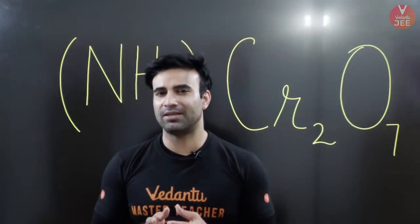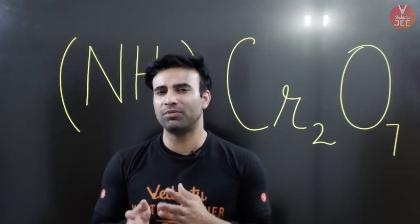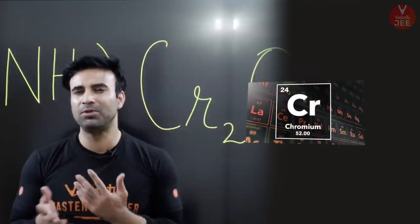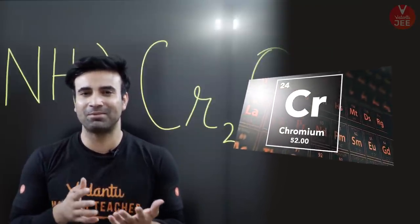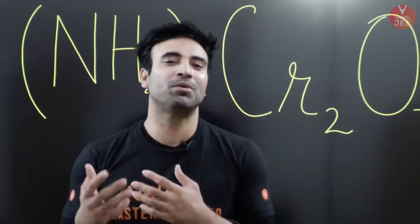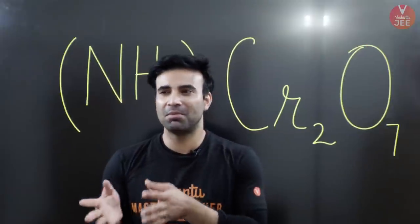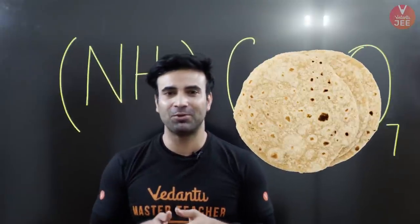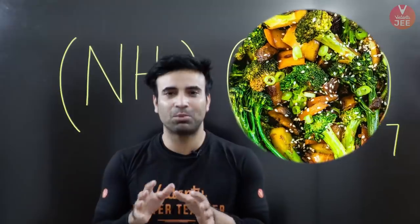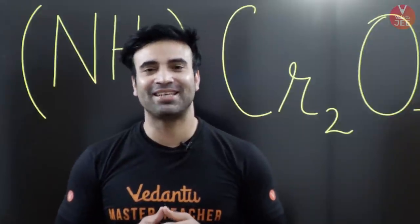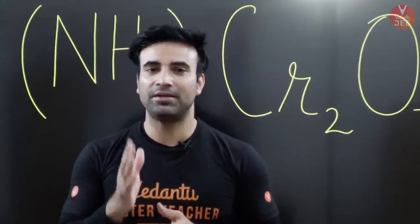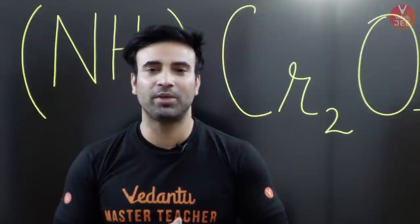If I ask you when did chromium first come into your life, you might answer that it came when we first learned about the configuration of atoms. But actually, chromium came much earlier — when we first ate roti, aloo, or broccoli. All of them contain chromium. Today we are going to learn about the interesting compound ammonium dichromate.